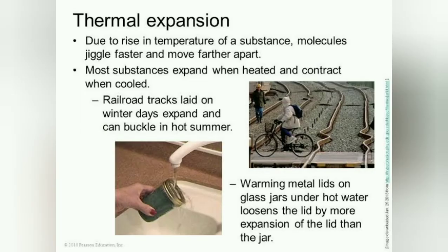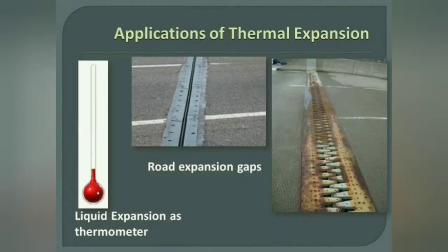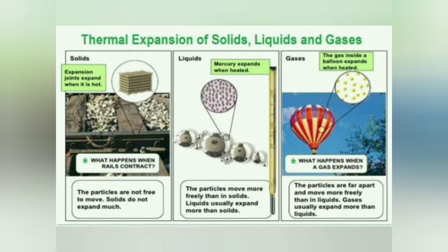Due to the rise in temperature, molecules jiggle faster and move farther apart. Most substances expand when heated and contract when cooled. For example, railroad tracks laid on winter days can expand and buckle in the hot summer. Warming metal lids on glass jars under hot water loosens the lid by the greater expansion of the lid than the jar. A few applications of thermal expansion are: liquid expansion thermometers, road expansion gaps, and thermal expansion of solids, liquids, and gases.